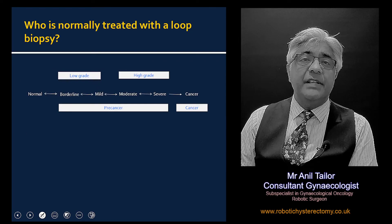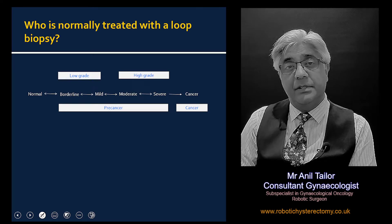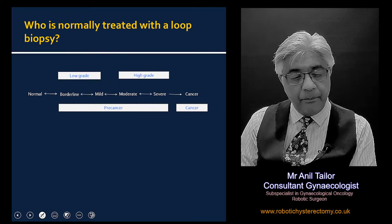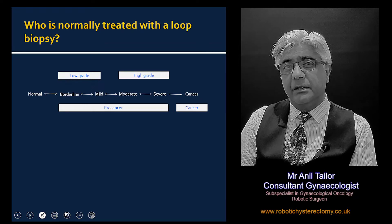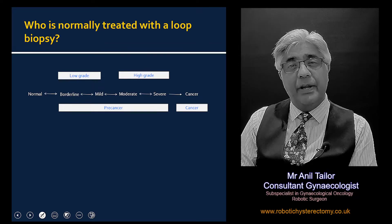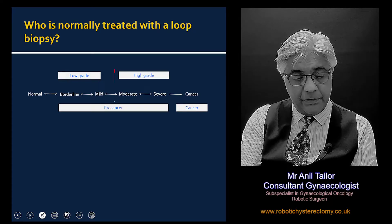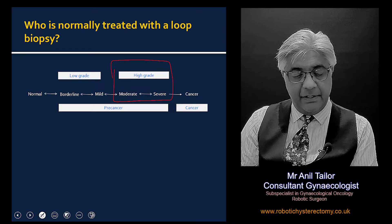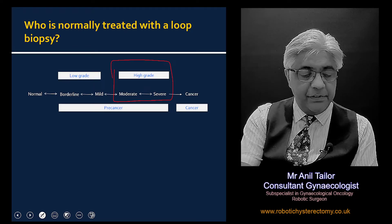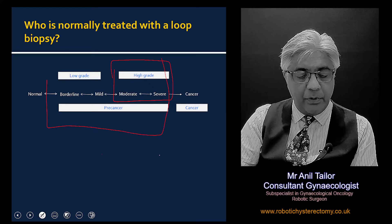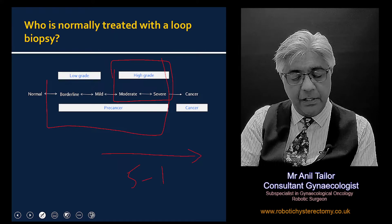To understand who is generally treated with a loop biopsy, we need to understand a little bit about how smears are graded. Smears can be low grade or high grade. The high grades are the ones where the abnormality is deemed to be either moderate or severe. All of this is in the pre-cancer range, and for it to go from pre-cancer to cancer can take anything from five to fifteen years.